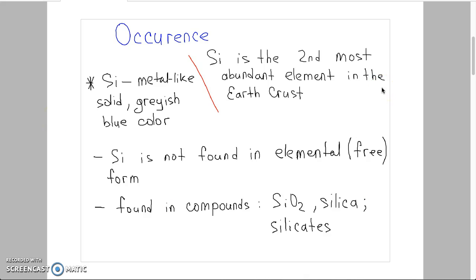Silicon is the second most abundant element in the earth's crust after oxygen. In its physical properties silicon is similar to metalloids, and in its chemical properties it's similar to non-metals. Silicon is a metal-like solid with grayish blue color.